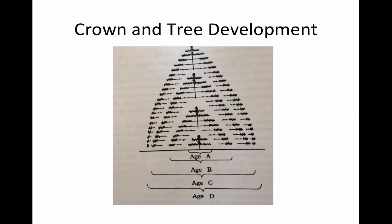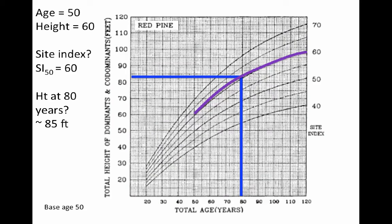Site index is a tool to give some idea of site quality and where the stand may be moving. Comparing a site index of 60 versus 50, we can see trees on the higher index site are on higher quality ground — whether it's soil, moisture, or some combination — that allows for better growth. This difference between a site index of 40 and 60 or 70 can be a huge influence.